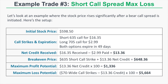Now let's look at a losing short call spread. The initial stock price is $598.50. We sell the 635/705 call spread, collecting $16.35 for the 635 call and paying $2.99 for the 705 call. Both options expire in 49 days. Our net credit is $13.36, giving a break-even price of $648.36. Maximum profit potential is $1,336 and since this is a $70-wide spread, the maximum loss potential is $5,664.